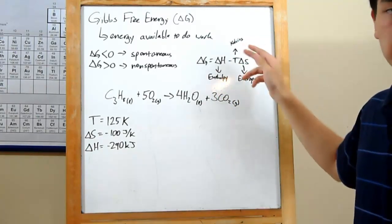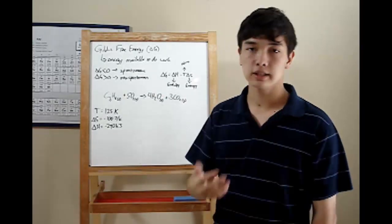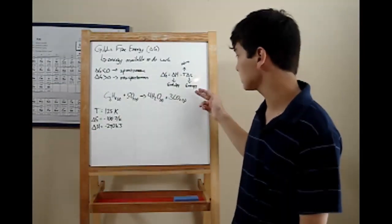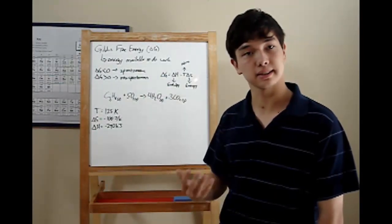minus T, temperature in kelvins, times delta S, entropy. Entropy is the amount of disorder. If you have a positive S, then your disorder is increasing, things are getting messier.